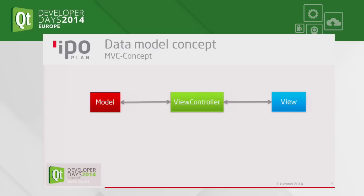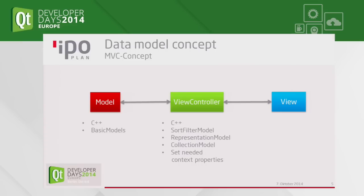As Martin said, we have a huge amount of data in our programs. I'll focus on EpoLog, which is used to visualize fabrication data, assembly lines, and related content. Basically we use the MVC pattern. The model is implemented purely in C++. The view controller is also in C++, where we've implemented some special models for the view — starting with the sort filter model, but also a representation model and a collection model, which I'll come back to later.